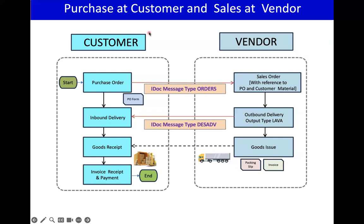If you see the overall process, the start is the customer creating a purchase order. It might have a purchase requisition, RFQ — we discussed multiple things. Finally, the purchase order is the external document. The purchase order is created by the customer and via output type, the IDoc message type ORDERS is sent.